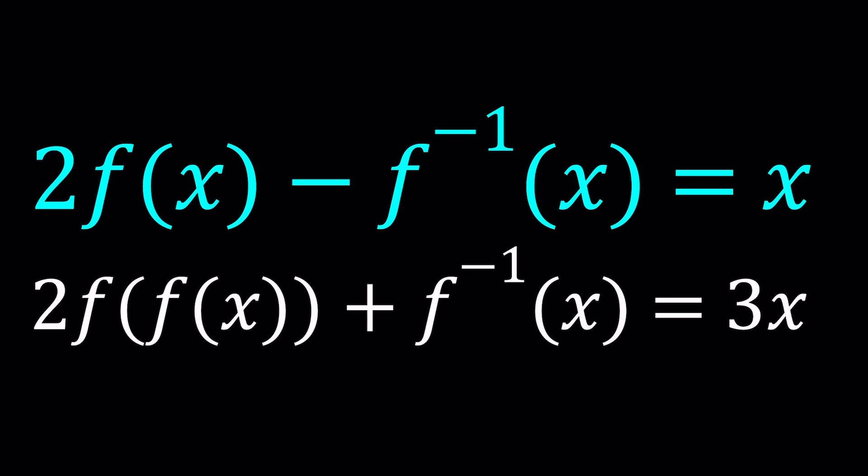And then the second one is 2 times f of f of x, the composition of f with itself, plus the inverse function equals 3x. So I guess this could be considered a system. And I call this a homemade problem because I thought about the idea. I haven't seen a problem like this before. If you did anywhere else, let us know in the comment section.